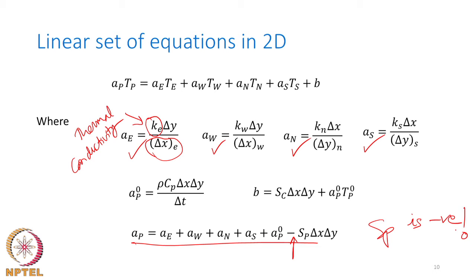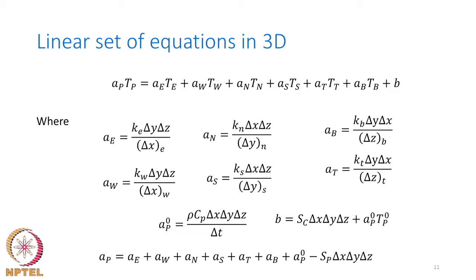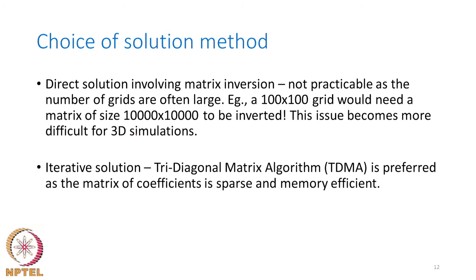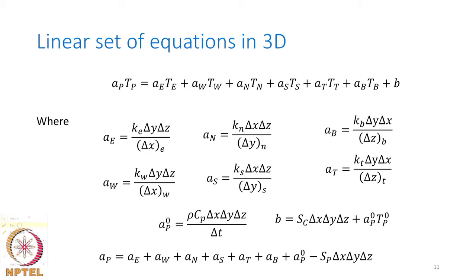Once all coefficients are available, the linear set of equations is ready in 2D. Extension to 3D is straightforward — the coefficients have more terms with two additional distances, but follow the same pattern. All coefficients remain positive, a_P equals the sum of all neighboring temperature coefficients when the source term is zero, confirming that the 1D to 3D extension is consistent using a structured grid in the control volume approach.